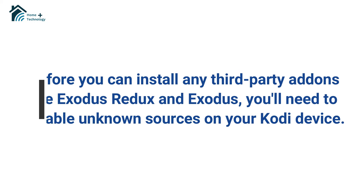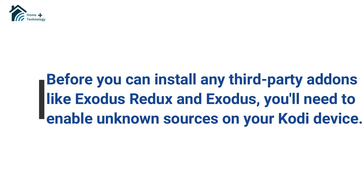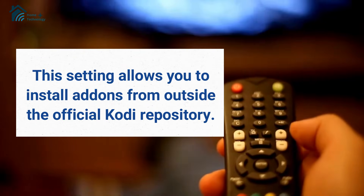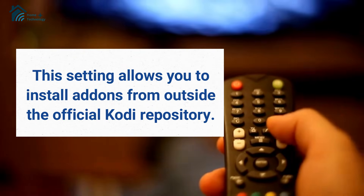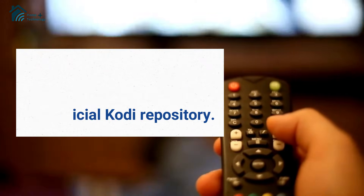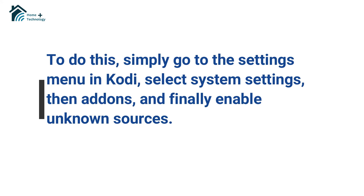Before you can install any third-party add-ons like Exodus Redux and Exodus, you'll need to enable unknown sources on your Kodi device. This setting allows you to install add-ons from outside the official Kodi repository. To do this, simply go to the Settings menu in Kodi, select System Settings, then Add-ons, and finally enable unknown sources.